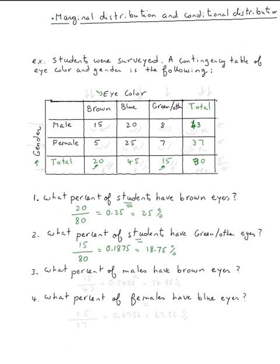Next question: what percent of males have brown eyes? This time, the number of males goes in the denominator. We have 43 males, so 43 goes in the denominator. The number of males with brown eyes is 15, so it's 15 over 43. Using a calculator, that's 0.3488, or 34.88%.